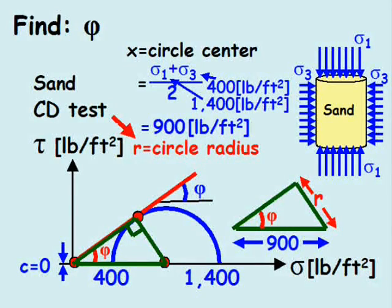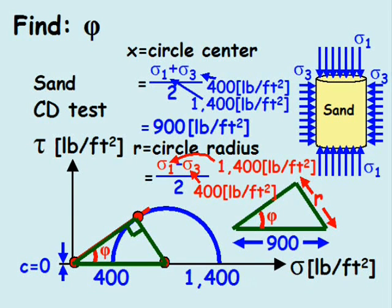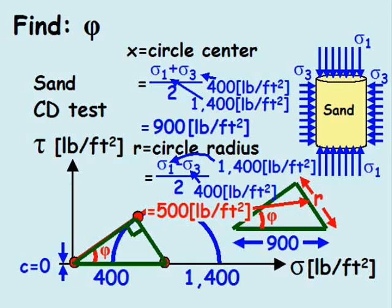We next define the radius of the semicircle as R, which equals the axial stress minus the confining stress, all divided by 2. After plugging in the values like before, we learn the radius is 500 pounds per square feet.